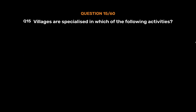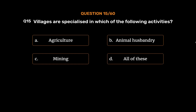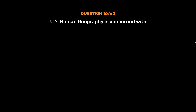Question number 15: Villages are specialized in which of the following activities? Option A: agriculture, option B: animal husbandry, option C: mining, option D: all of these. The correct answer is option D, all of these. Rural settlements or villages are mainly specialized in primary activities like agriculture, animal husbandry, fishing, and mining. These are associated with natural resources and are the main source of raw material and food for urban settlements.